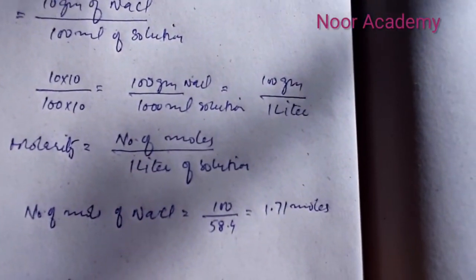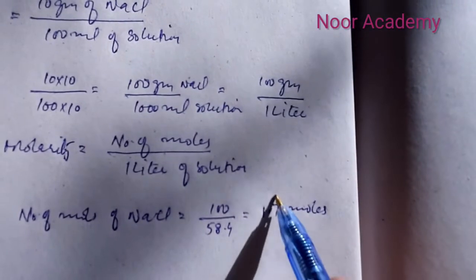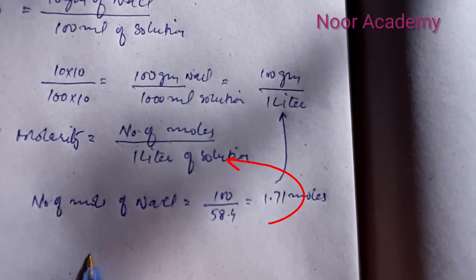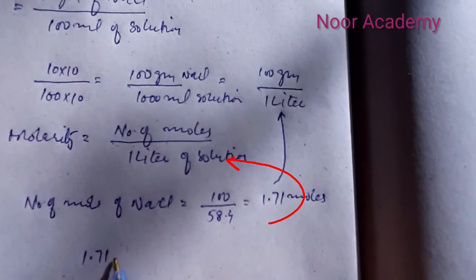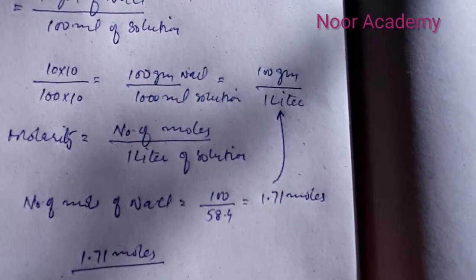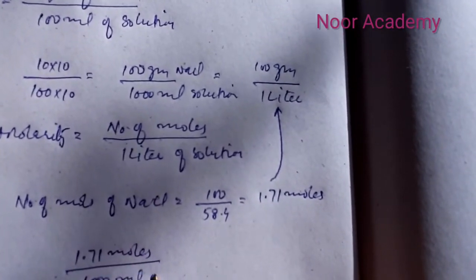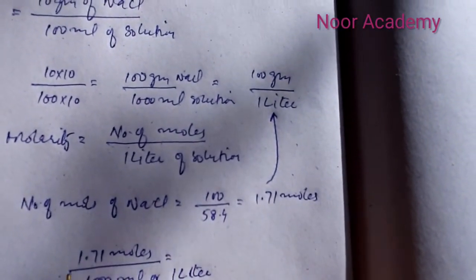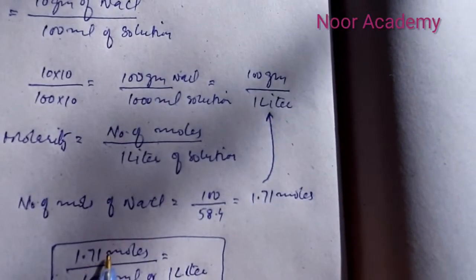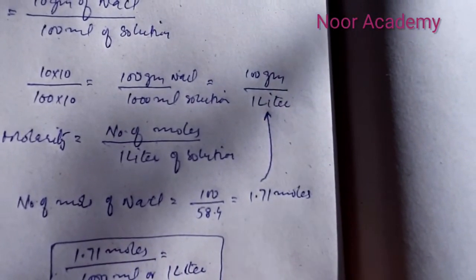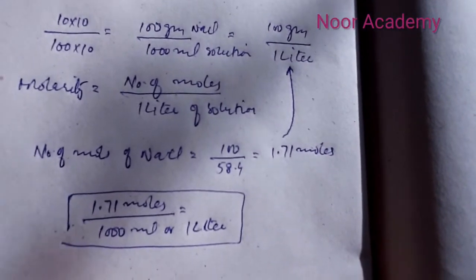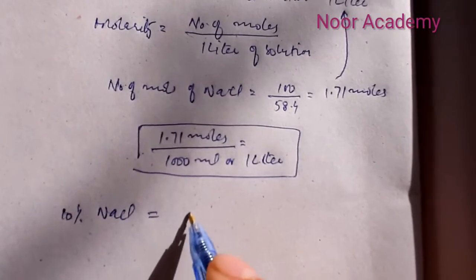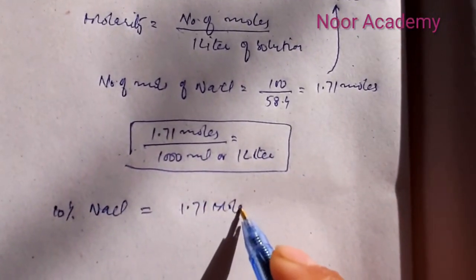Now we can put these values into our equation, and this would come out to be 1.71 moles over 1000 ml or one liter. Now this is actually the molarity. You know number of moles over one liter is the molarity, so this 10% NaCl solution is equal to 1.71 molar solution.